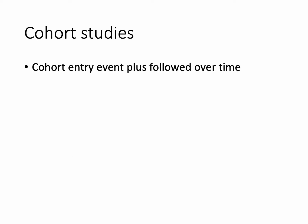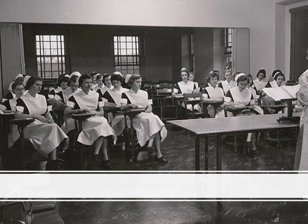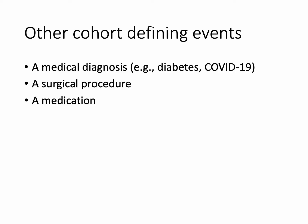Cohort studies are actually pretty simple. They are defined as individuals having a cohort entry event, plus they're followed over time. One of the most famous examples in the epidemiologic literature is the Nurse's Health Study — a cohort of nurses aged 30 to 55 in 1976 who were followed forward in time. Other cohort-defining events might be a medical diagnosis like diabetes or COVID-19, or individuals who had a surgical procedure or received some medication.